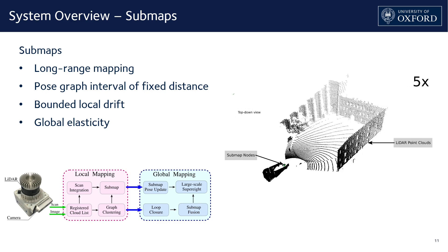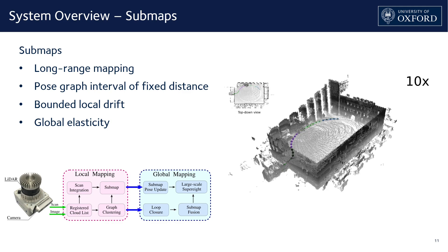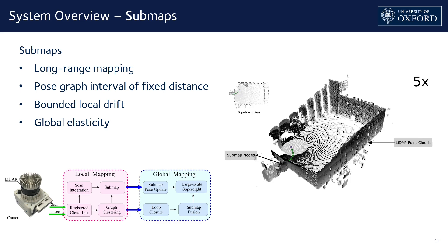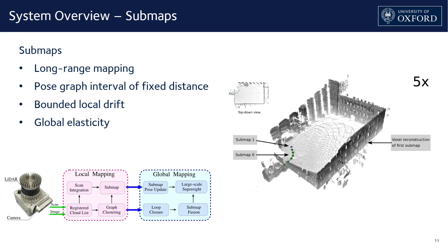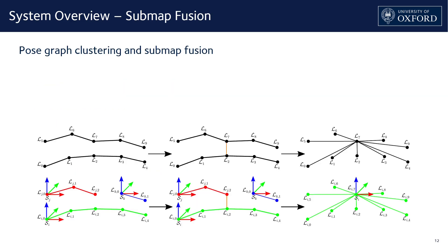Submaps are the basic units of reconstruction in our system, replacing a full global map. We divide a SLAM pose graph into intervals based on a fixed travel distance and integrate LiDAR scans within each interval into a submap. This bounds each submap's internal odometry drift. Each submap is also associated with a root pose and can be moved around to maintain consistency in the global map if the SLAM system corrects its pose graph upon loop closure. When a loop closure is detected, our system also fuses submaps together to reduce memory usage. The loop closure detected between pose 2 and pose 7 groups surrounding nodes into a loop closure cluster, which guides the fusion of surrounding submaps — in this case, submaps SI, SJ, and SK are fused together into one submap. The benefit of this strategy is to reduce overlapping and redundant reconstructions and improve system scalability.